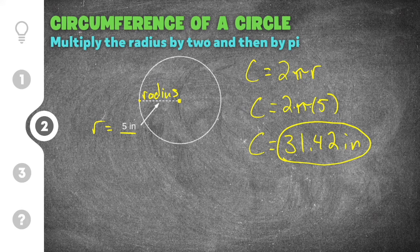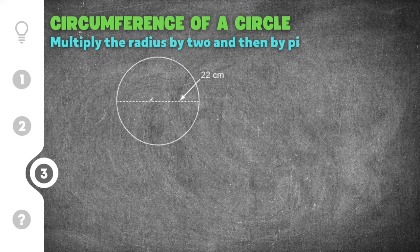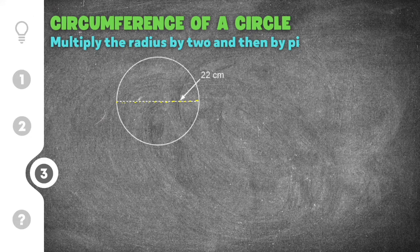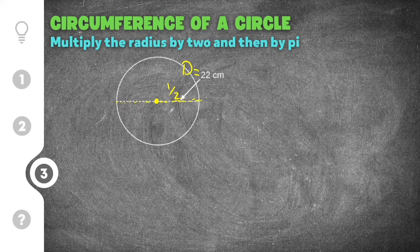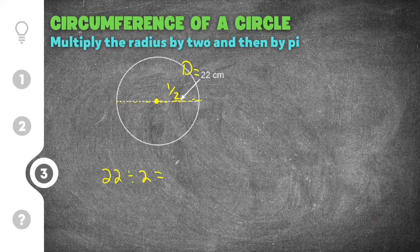Our last practice problem gives us another circle where the dashed line runs across the entire length of the circle, labeled with 22 centimeters. Because it's the entire length, that's the diameter — so the diameter is 22 centimeters. We have to convert this to radius. Since the radius is one half of the diameter, we take 22 and divide by two, giving us a radius of 11 centimeters, which equals r.